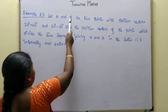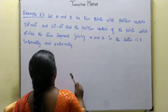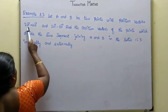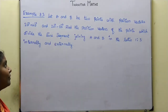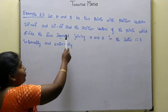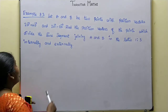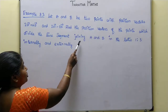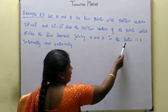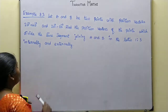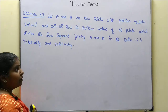Let A and B be 2 points with position vectors 2a vector plus 4b vector, and 2a vector minus 8b vector. Find the position vectors of the points which divide the line segment joining A and B in the ratio 1 is to 3 internally and externally.